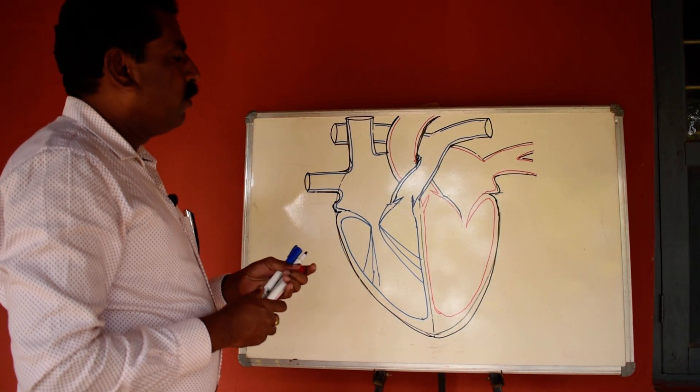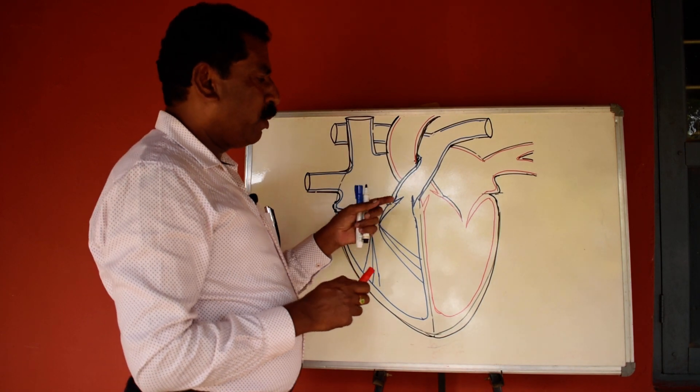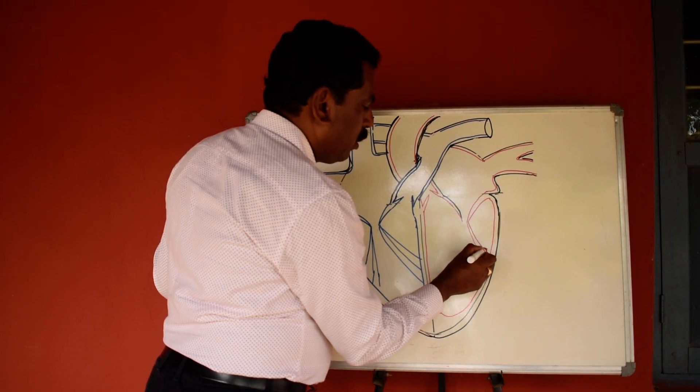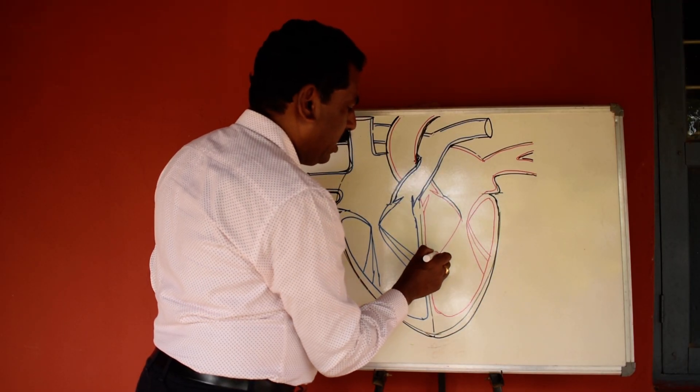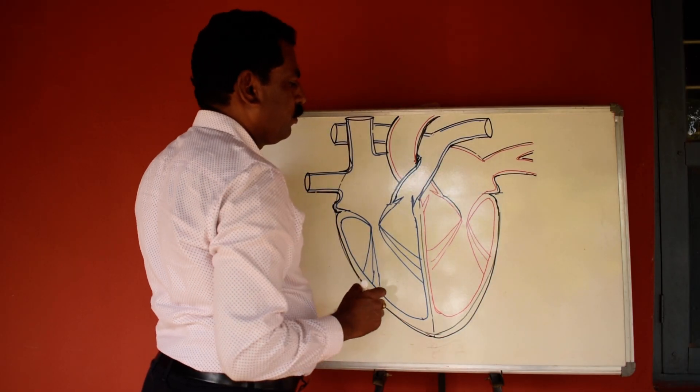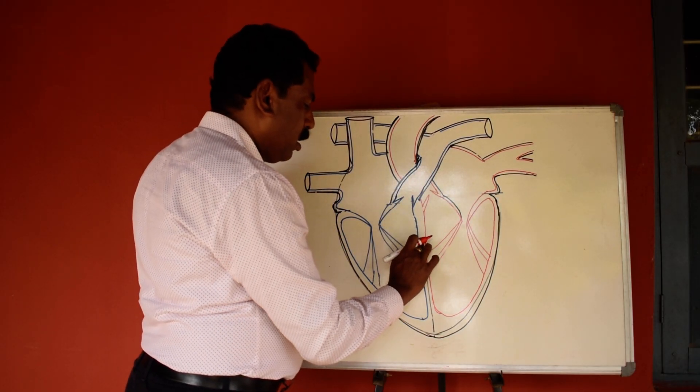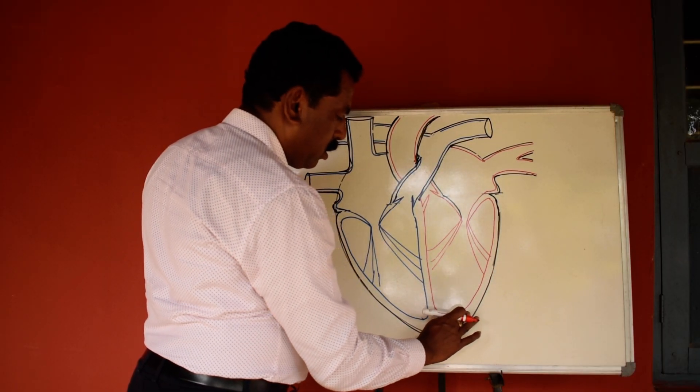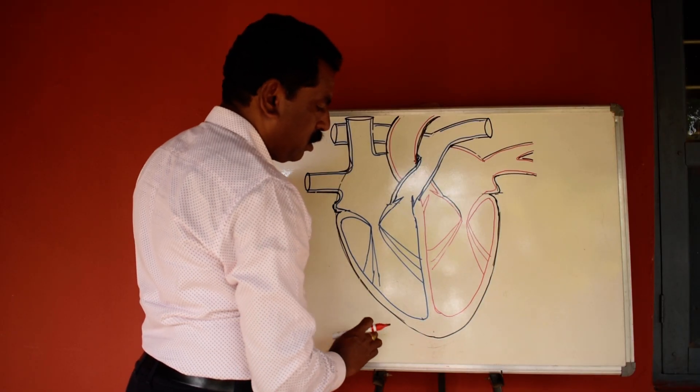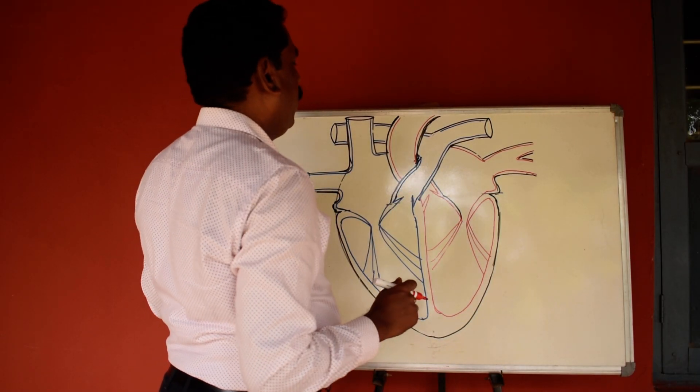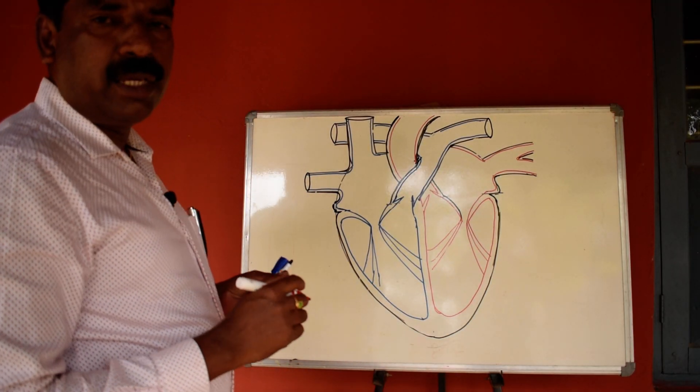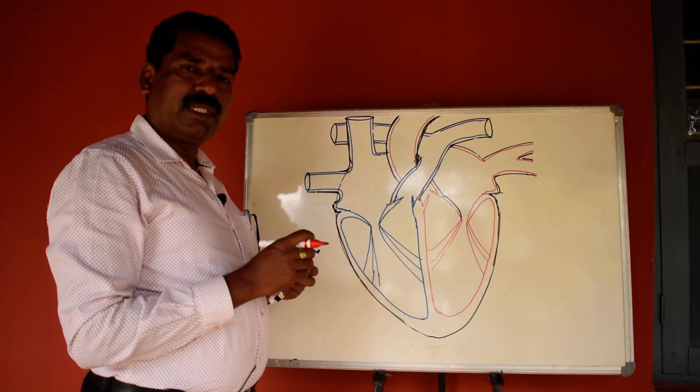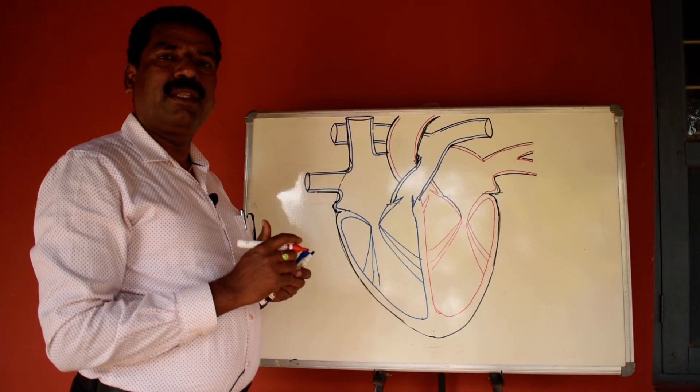Now the vertical section of the human heart has reached the final stage. I will rub this guideline now. In this way, we have to draw the diagram vertical section of the human heart easily. Thank you.